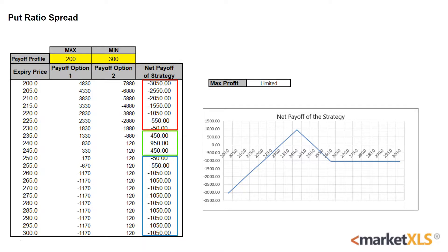This strategy has two breakeven points — the upper and the lower. The upper breakeven point is equal to the strike price of the long put plus the net premium received or paid. The lower breakeven point is equal to the strike price of the short puts minus the points of maximum profit divided by the number of uncovered puts.